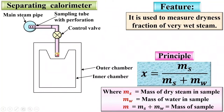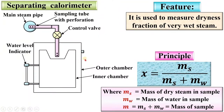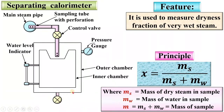Holes are also provided here, and the inner chamber is connected with the water level indicator. The outer chamber is connected by a pressure gauge, so you can measure the pressure of the steam. One wall is provided at the lower portion, called the stop wall.